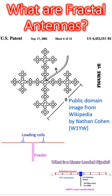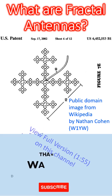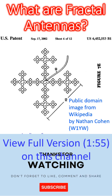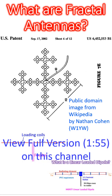Hence, fractal antennas are useful in cellular telephony and microwave communications. Another advantage is that the size is smaller without the use of additional components like a loading coil, which is often used to electrically shorten antennas. Loading coils, though they make antenna size more convenient for mounting, cause loss of energy in their resistance.